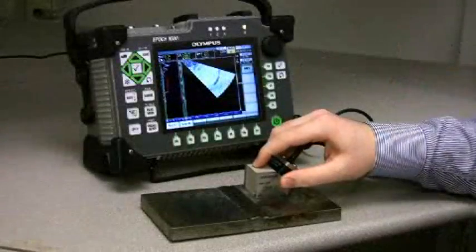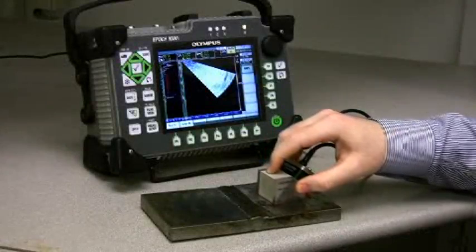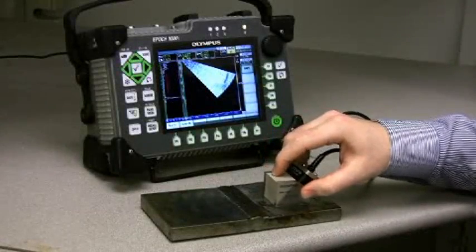The phase-array imaging package on the EPIC 1000 series provides more efficient inspections and higher confidence of detection while maintaining conventional sizing techniques for codes such as AWS.